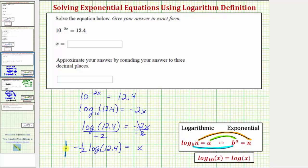So this is our exact solution that we enter into our first cell. We have x equals negative one half times the common log of 12.4.